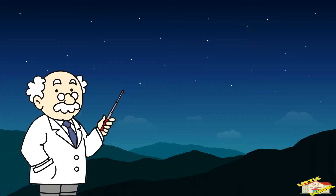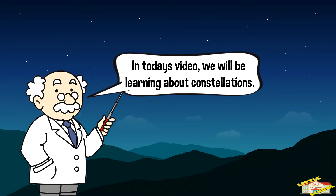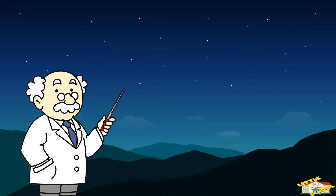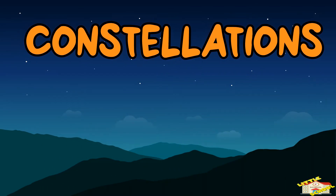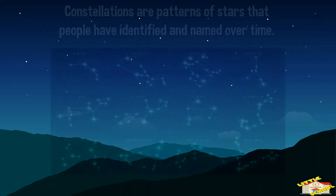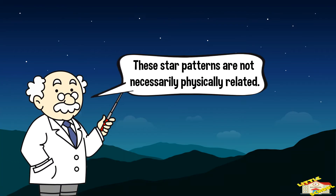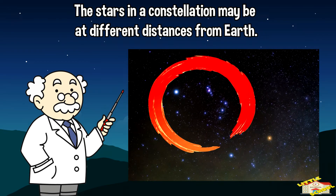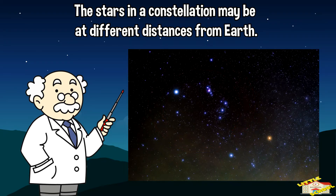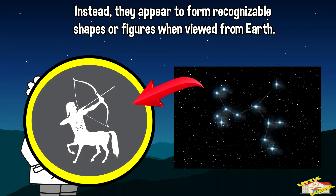Hey kids, in today's video we'll be learning about constellations. Are you ready? Let's begin. Constellations are patterns of stars that people have identified and named over time. These star patterns are not necessarily physically related — the stars in a constellation may be at different distances from Earth and may not have any actual connection to each other in space. Instead, they appear to form recognizable shapes or figures when viewed from Earth.